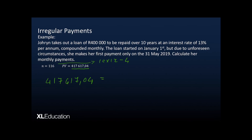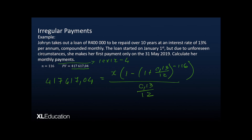Now we put it into our present value formula. 417,617.04 equals x times (1 minus (1 + 0.13/12) to the power of negative 116) divided by (0.13/12), where 116 is the number of payments (10 times 12 minus 4). Solving for x, we find that her monthly payments are 6,341 rand and 11 cents — this being the result of her having started paying four months late.